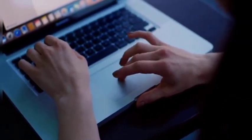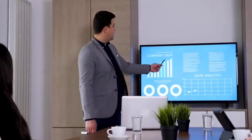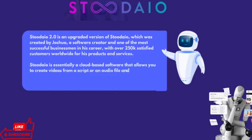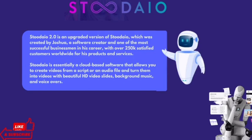Stodeo 2.0 is an upgraded version of Stodeo, which was created by Joshua, a software creator and one of the most successful businessmen in his career, with over 250k satisfied customers worldwide. Stodeo is essentially a cloud-based software that allows you to create videos from a script or an audio file and turn them into videos with beautiful HD video slides, background music, and voiceovers.